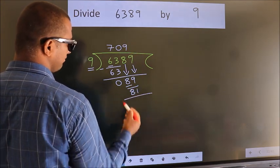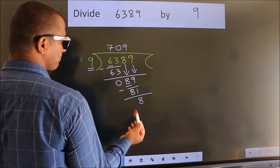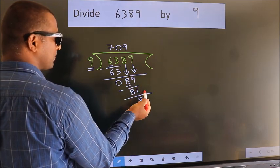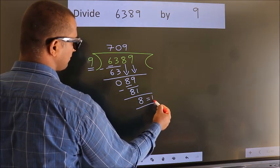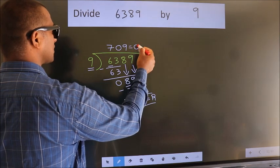Now we subtract. We get 8. No more numbers to bring it down. So we stop here. This is our remainder. This is our quotient.